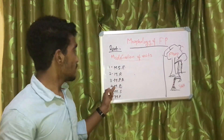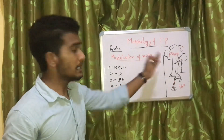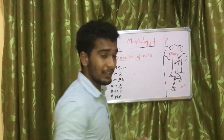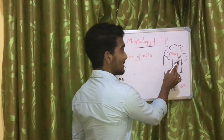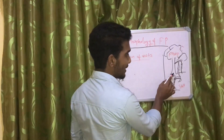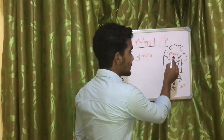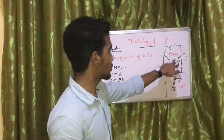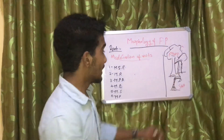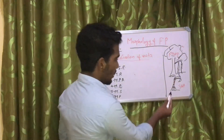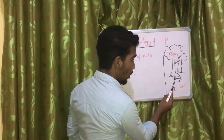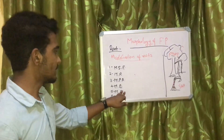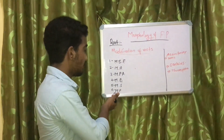The fifth modification is for support. In banyan trees, a special type of root called a prop root is found. If a root arises from a lateral branch (not the primary axis), that root is called a prop root, which provides additional support to the branch. Prop roots are found in banyan trees. In sugarcane, fibrous roots arise from the nodes — these are called stilt roots. These two are modifications for support.